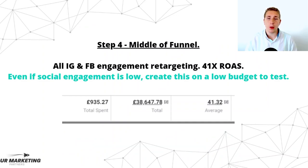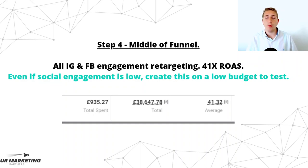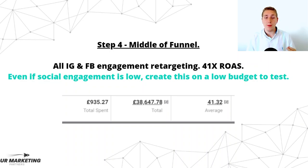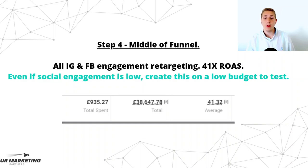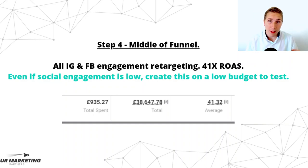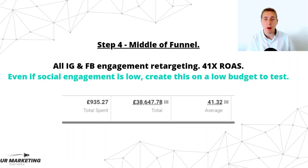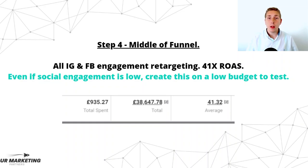Next up, middle of funnel. These are people who are warm — they know about the business, they may have engaged with you in some form, but may not have actually purchased. In this scenario, in the last year — again a very small spend. They don't have a huge social media audience, so it's only spent 935 pound in the last year, but it's brought just shy of 40K out at a 41X return. All we've done here is retargeted Instagram engagement and Facebook engagement — frequency is quite low but the results are strong.